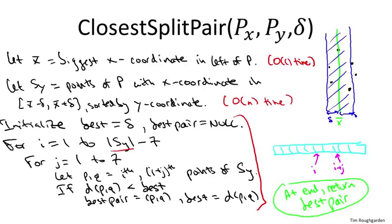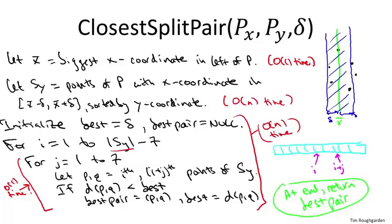As for the running time of this subroutine: we do constant work initializing variables. The set SY has at most n points, so the outer for loop runs a linear number of iterations. The key point is that the inner for loop only looks at seven other positions — a constant number — and does only constant work per position (comparing distance and resetting variables). So for each of the linear number of outer iterations, we do constant work, giving a running time of O(n) for this part — exactly as required.